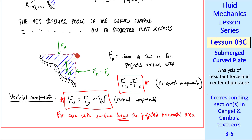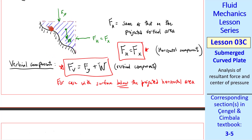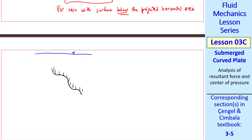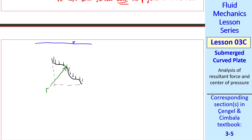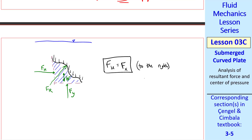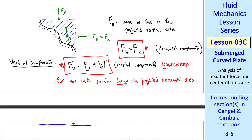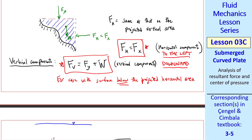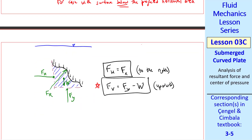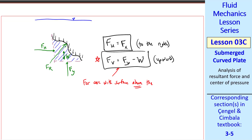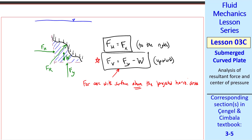Here's the surface and here's the projected horizontal area. What if instead we have a submerged surface, but we're interested in the resultant force acting on the bottom of the surface? Again, we consider this chunk of water as a control volume. The weight is down, but this time Fy is up and Fh is to the right. In this case, Fh is still equal to Fx to the right, but the magnitude of the vertical force is now Fv = Fy − W, since they're acting in opposite directions, and this is upward. You have to be careful of where your surface is compared to the water — namely above or below the water. This is for the case with the surface above the projected horizontal area.